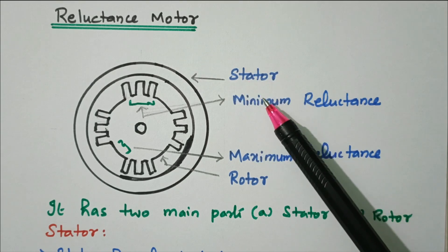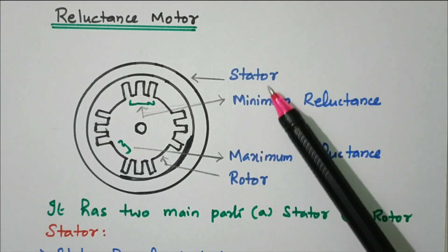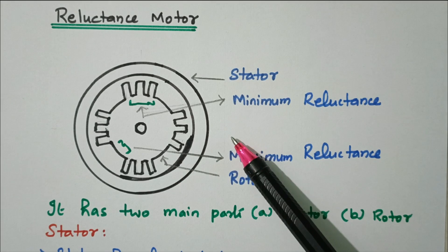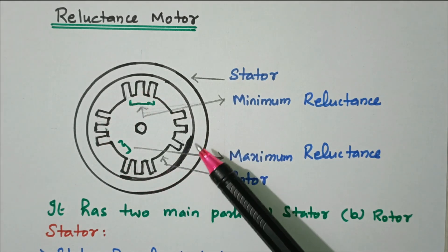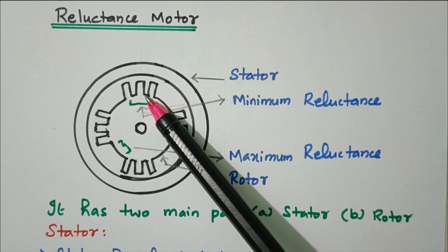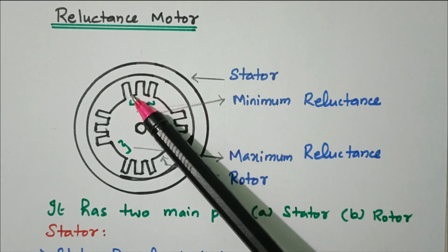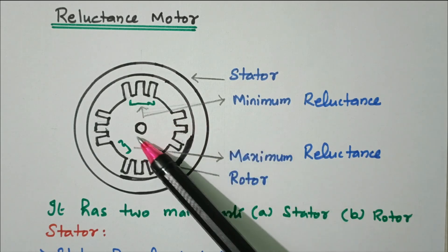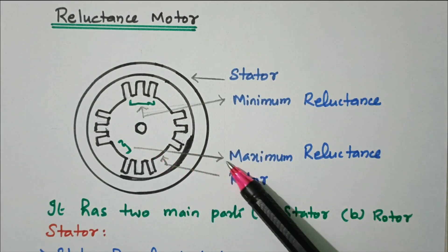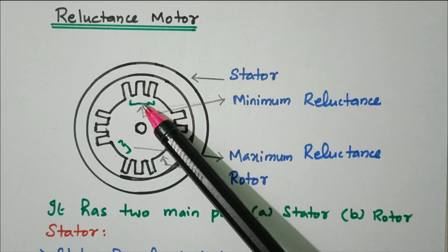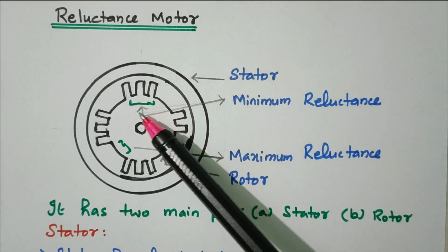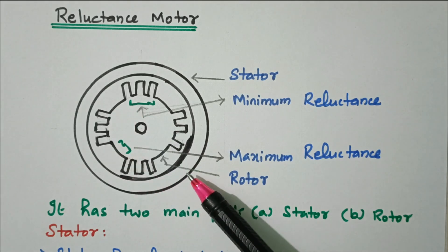Now we'll go to the topic: reluctance motor. This motor has, as usual, a stator and a rotor. The rotor is not uniform — the poles are not distributed uniformly. Due to that, the reluctance will vary. For example, in the portion where slots and coils are available, the reluctance is minimum. In the portion where there are no coils and slots, the reluctance is maximum. So the reluctance value varies because the rotor is not uniform, and this depends upon the number of slots and the construction.